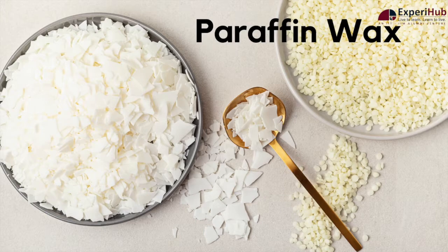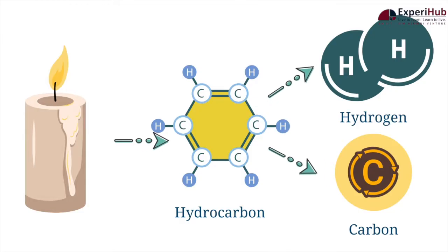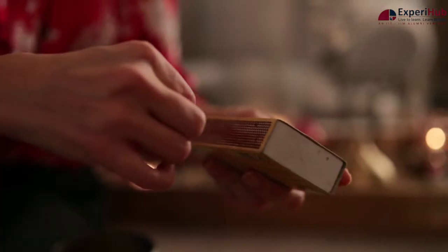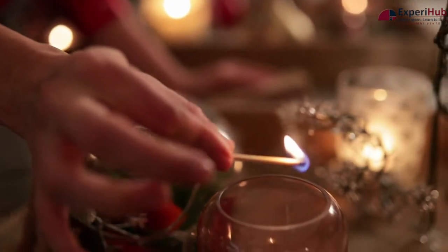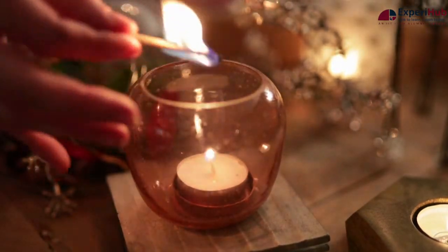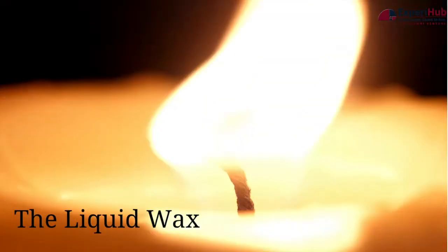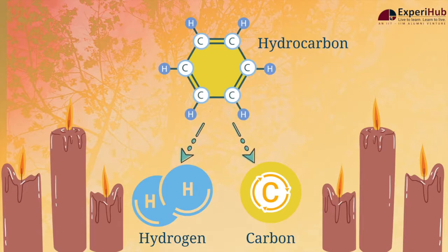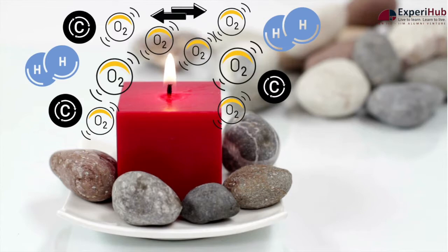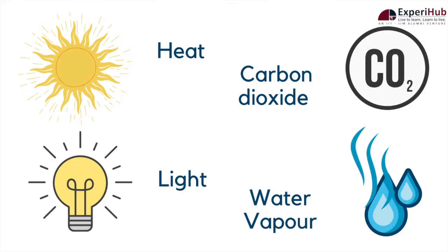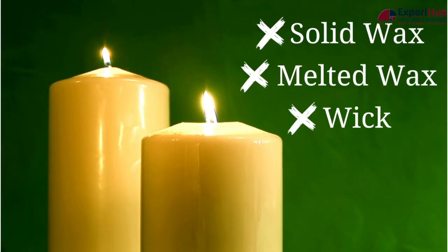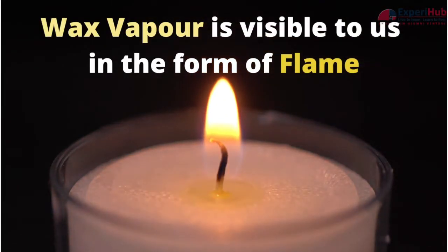Most candles are made from paraffin wax, which is a hydrocarbon made up of hydrogen and carbon atoms. When we light a candle, the flame's heat melts the wax around the wick. The heat vaporizes the liquid wax and breaks down the hydrocarbons into hydrogen and carbon. These molecules react with the oxygen present around them and produce heat, light, water vapor, and carbon dioxide. It is not the solid wax, the melted wax, or the wick which burns — it is the wax vapor that, as it ignites, is visible to us as the flame.